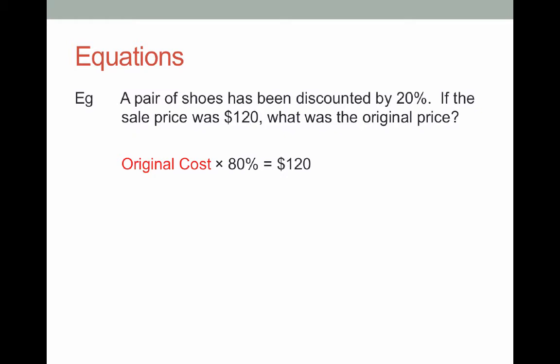This is now an equation, and with this equation I want to know what the original cost was. So what I want to do is I want to get rid of this times 80%. In order to get rid of this times 80%, what I'm going to do is I'm going to move it to the other side of my equal sign.